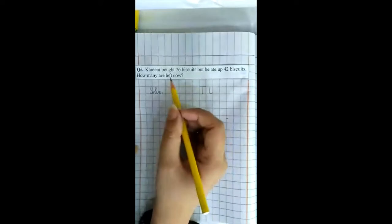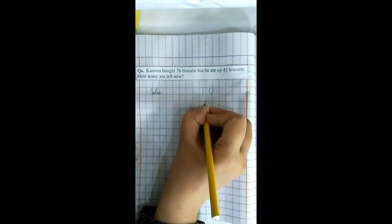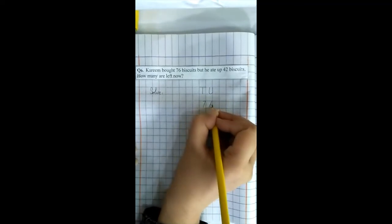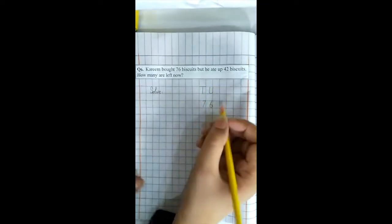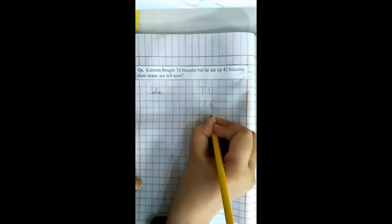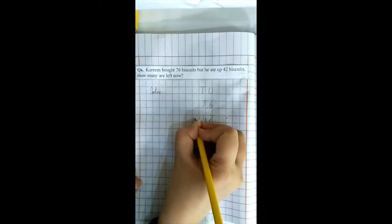How many candies Kareem bought? Seventy-six. And how many candies he ate up? Forty-two. Put the sign of subtraction. Minus کا sign لگائیں گے ہم. Use colors.